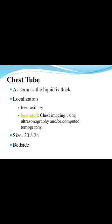The size of chest tube is 20 or 24 gauge, and this procedure is performed at the BAT site. Chest tube drainage is given as soon as the liquid is thick. Localization is free axillary, and loculation is imaged using ultrasonography and computed tomography.